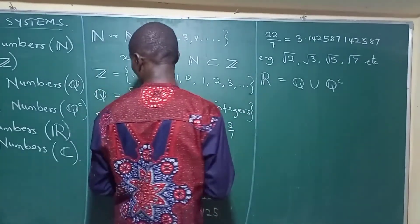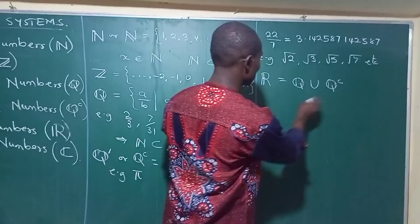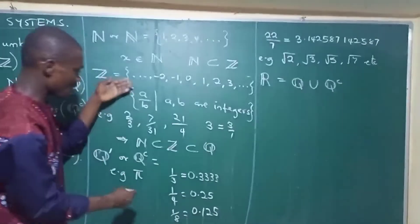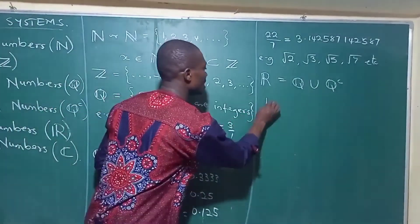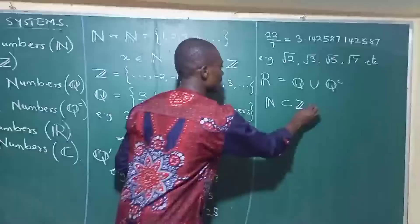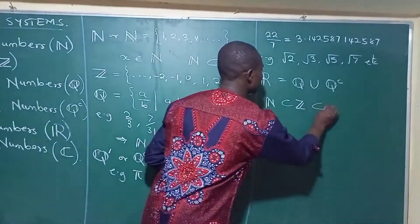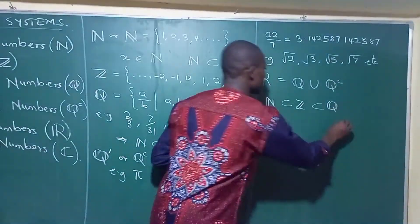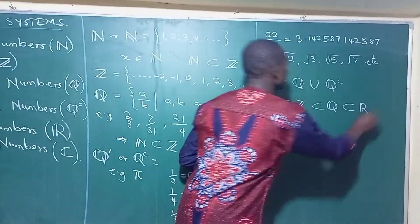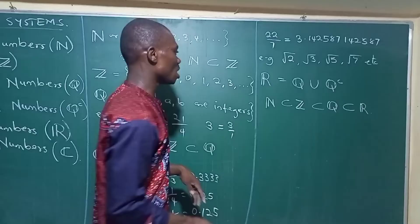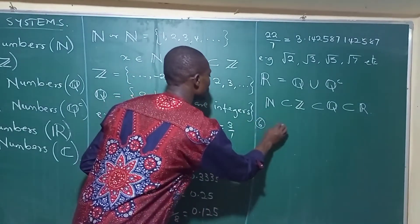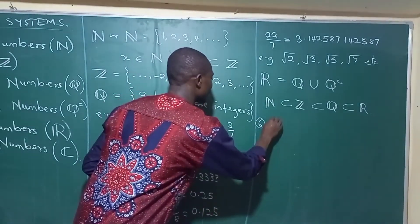Also note that this issue of containment continues: N is inside Z, and Z is inside Q, and now your Q is inside R. And finally, we have the sixth type, which is the complex numbers.